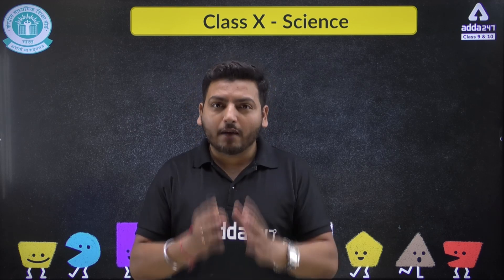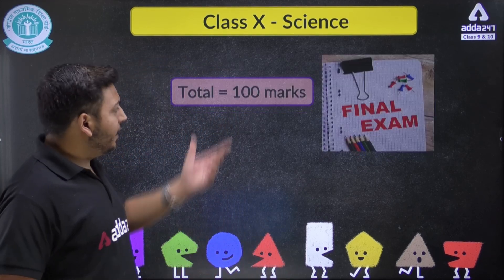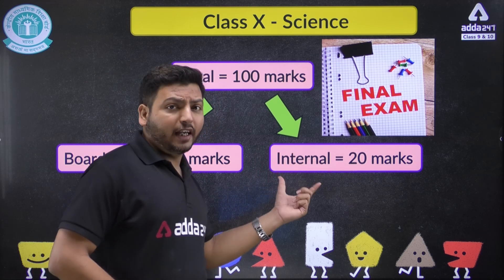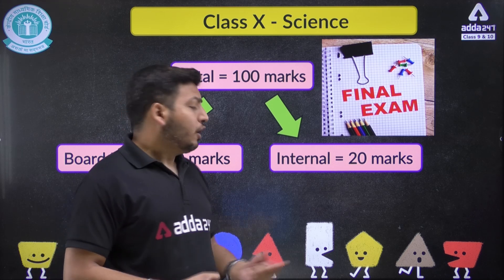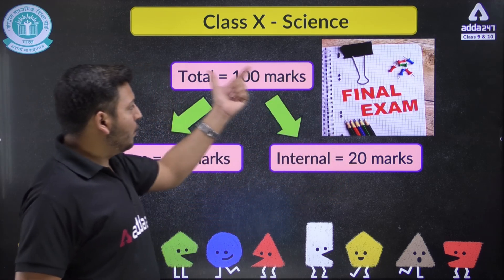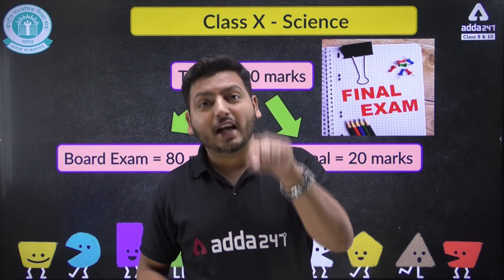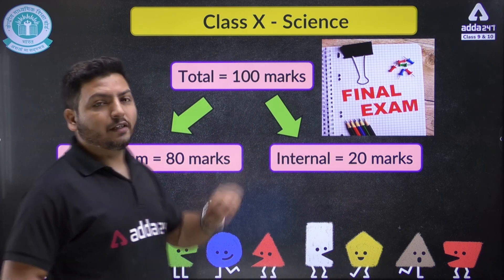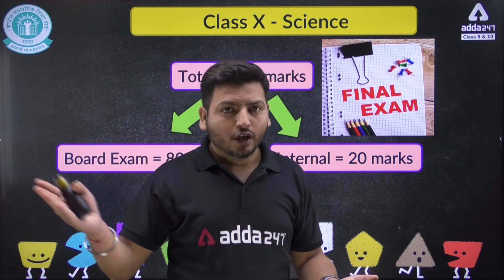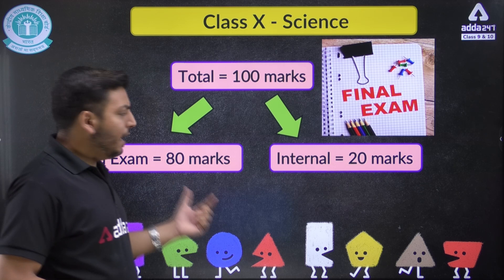This is a very big news you need to know. The single board exam will be 80 marks. The remaining 20 marks will be done in internal assessment — practical and project submission. So 80 marks is the board theory exam and 20 marks is internal, making your total evaluation 100 marks. This is a shift from two board exams back to a single board exam as it was before.